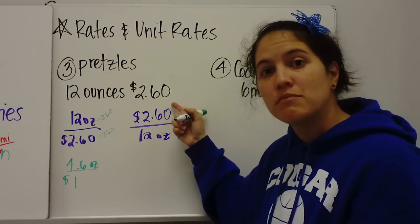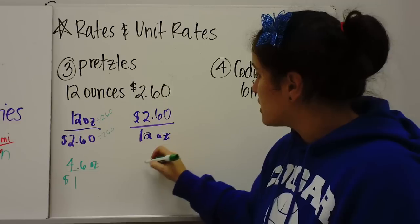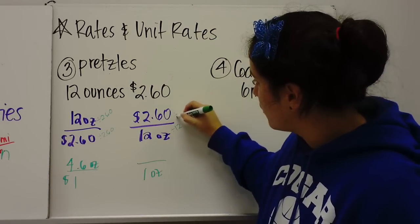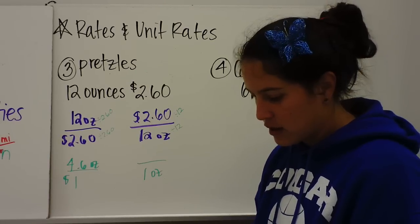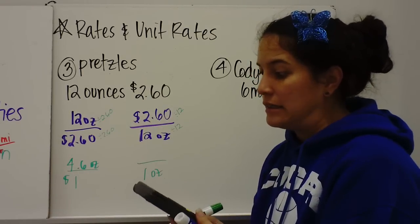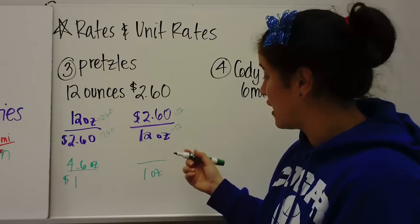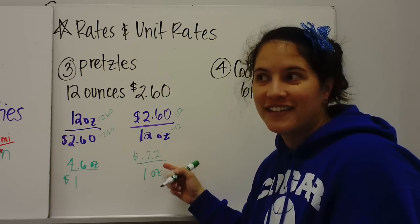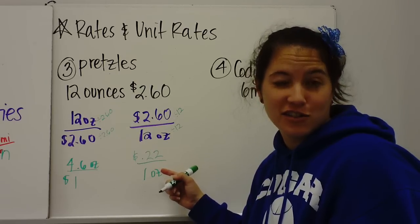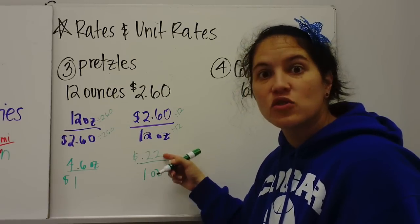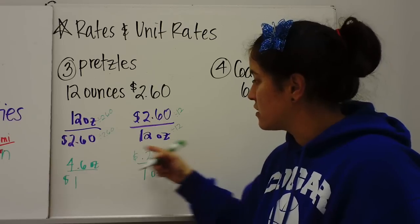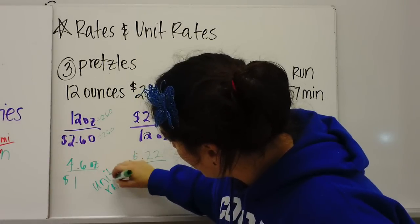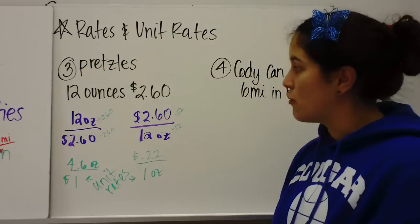The other way to do the unit rate is to put the money on top and the ounces on bottom. So I want to have, instead of 12 ounces, I want 1 ounce. So I'm going to divide by 12. So 260 divided by 12, 2.60 divided by 12. And you get .2166666 repeating. So I'm going to round that to 22. This means 1 ounce costs 22 cents. 1 ounce costs 22 cents. Or you can get 4.6 ounces for $1. So these are unit rates.